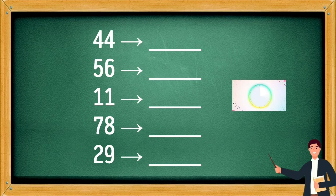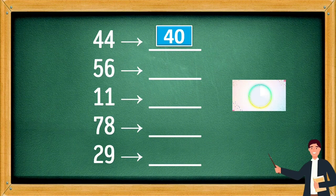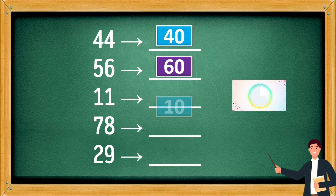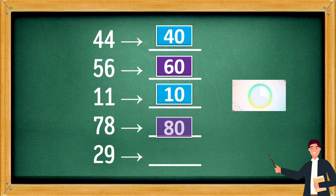44 rounding to 40, 56 rounding to 60, 11 rounding to 10, 78 rounding to 80, 29 rounding to 30.